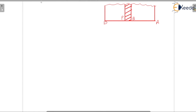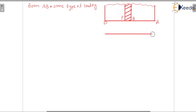Let us consider this diagram. I'm drawing a part of the beam — this figure shows a beam AB carrying some type of loading, which can be a point load, UDL, or mixed. Because of this loading, the beam will be subjected to bending moment and will bend. It is deflecting like this because of the loading.